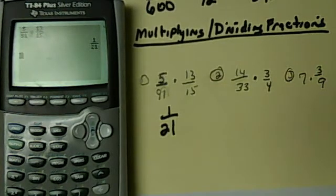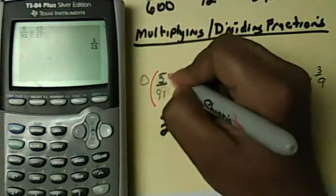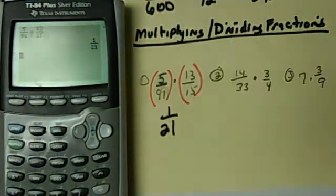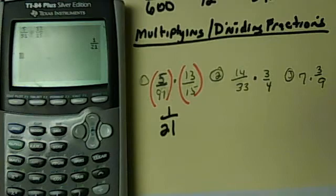If you do not have the upgrade the most important part is you must put those in parentheses. You have to put each individual fraction in their own parentheses. That's the only difference. So let's say I didn't have the upgrade. You always put parentheses around your fractions if you don't have the upgrade. I have 5 divided by 91. Now I need to close the parentheses.